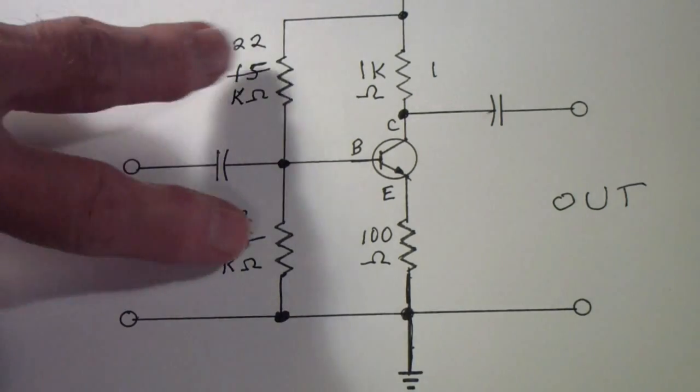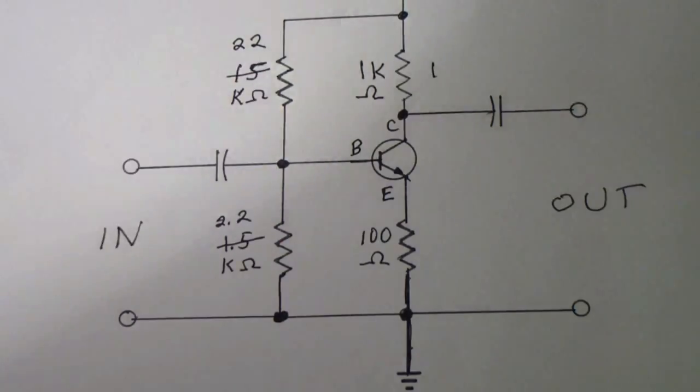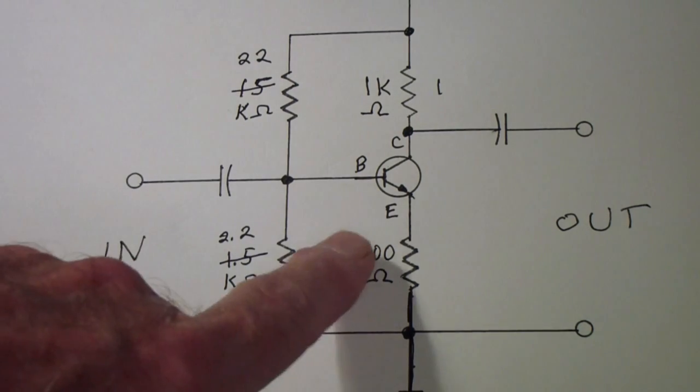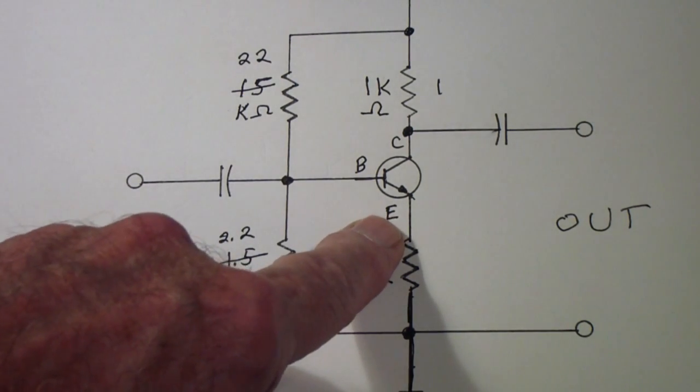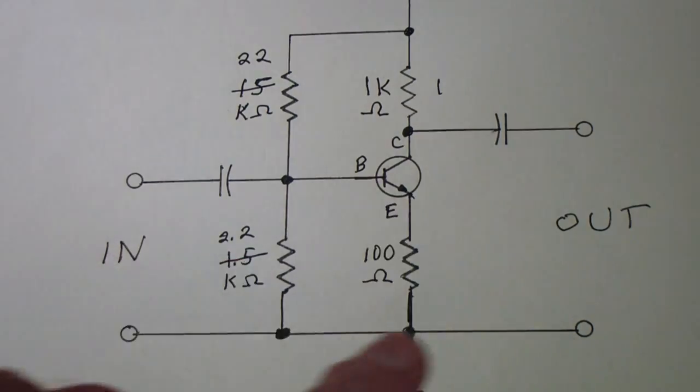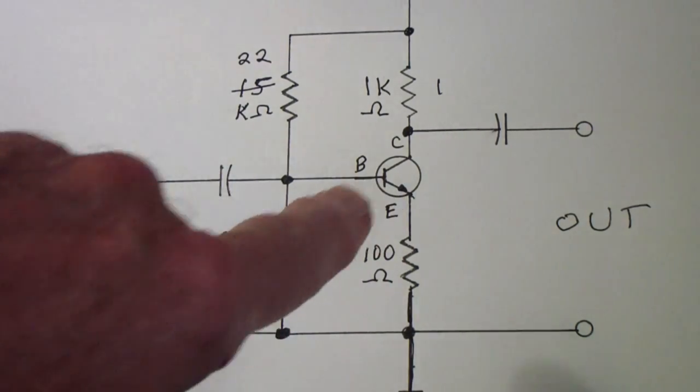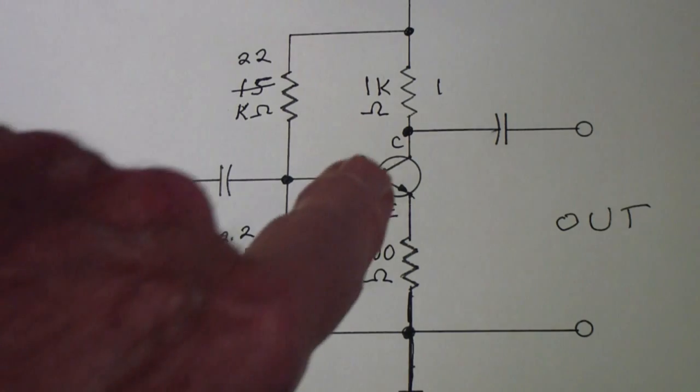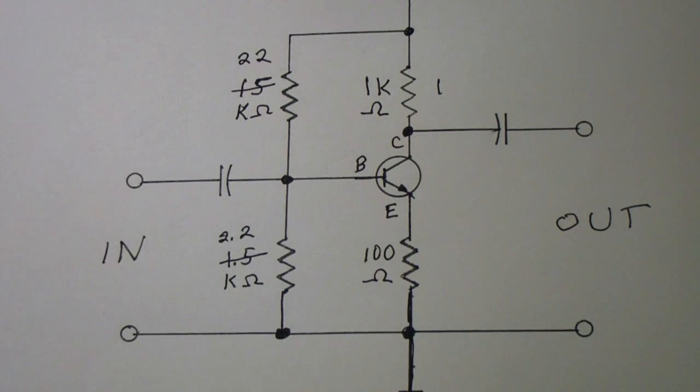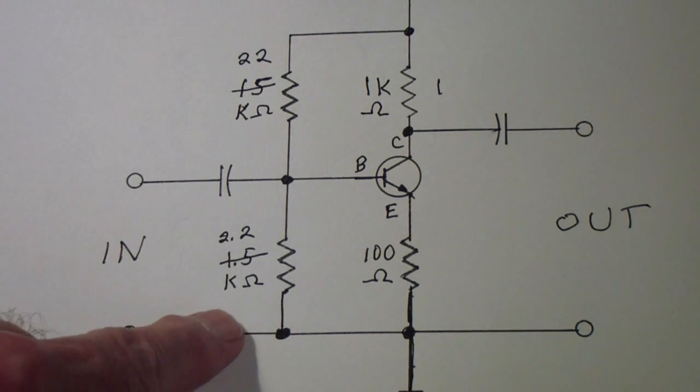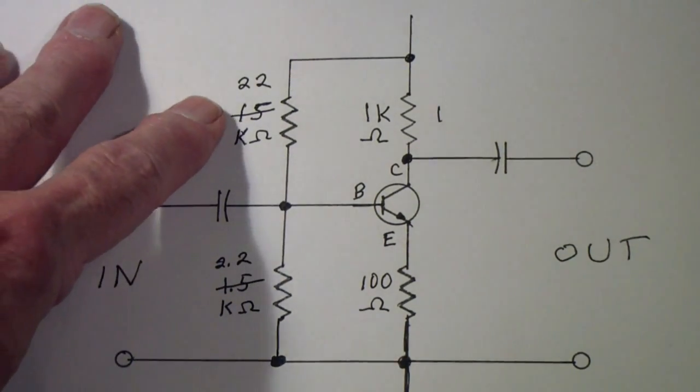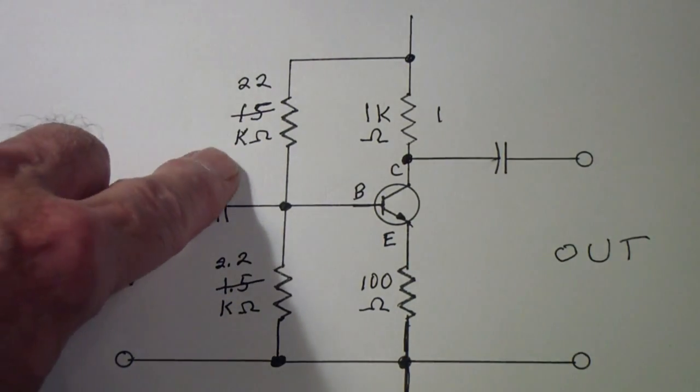And then we biased it using these two resistors by the method that we talked about in part 1, but I noticed that the transistor was drawing a little more current than I wanted. Now that was partly because we assumed a beta of 100, but we measured the beta on this transistor and we know it was 250. So what I did is I increased the value of this resistor to 2.2K, and I increased the value of this resistor to 22K.